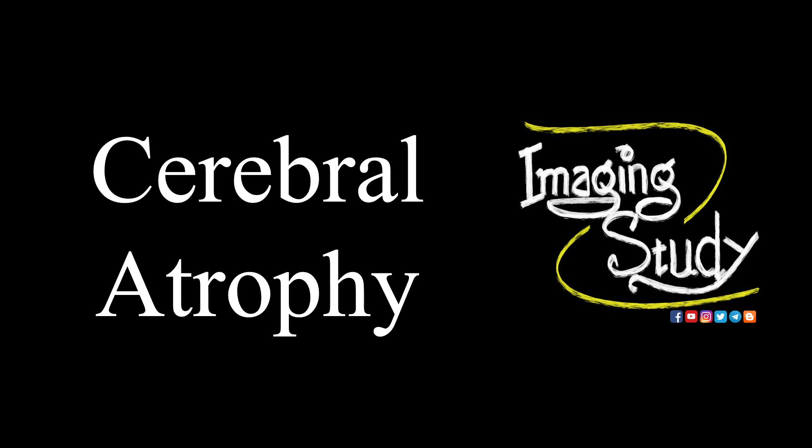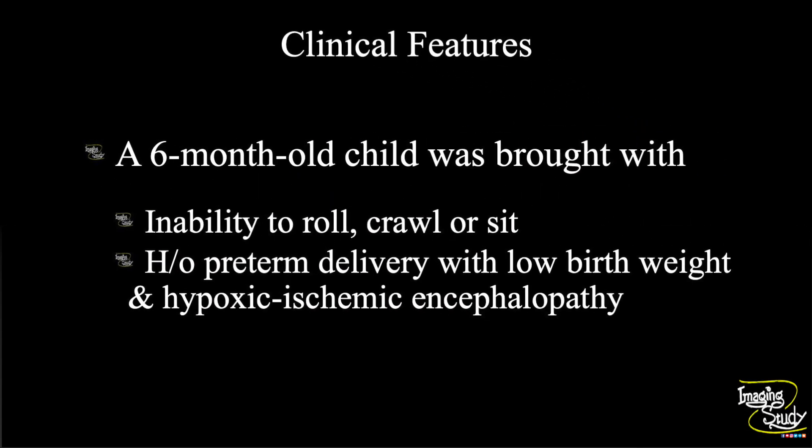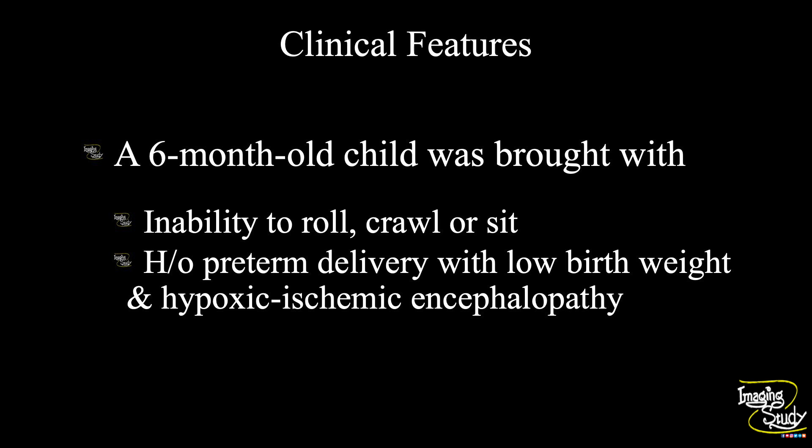Hi everyone, welcome to Imaging Study. Today we are going to see a case of pediatric brain — a case of cerebral atrophy. A six-month-old child was brought to us with a history of inability to roll, crawl, or sit. The baby had a history of preterm delivery with low birth weight and hypoxic ischemic encephalopathy. Let's see what we have on ultrasound.